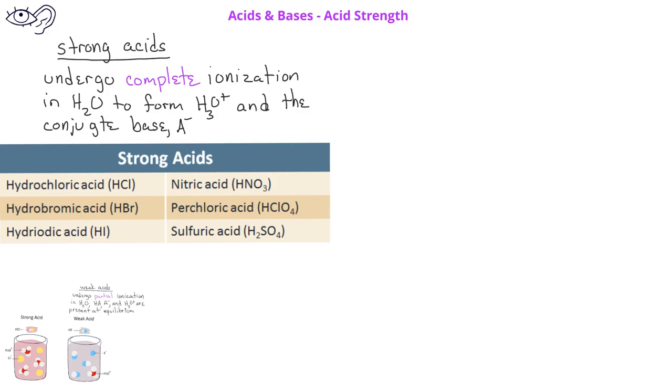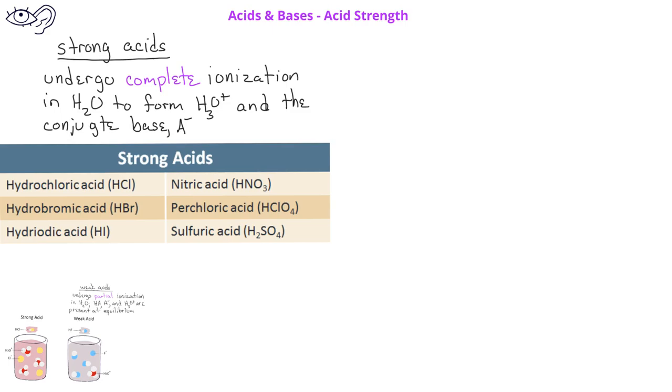The six strong acids you should memorize are hydrochloric acid, hydrobromic acid, hydroiodic acid, nitric acid, perchloric acid, and sulfuric acid. Again, other acids that we'll be using in these videos will be considered weak acids unless otherwise specified.